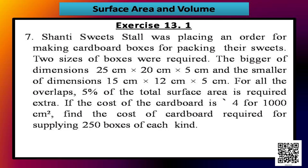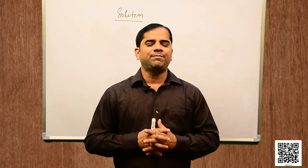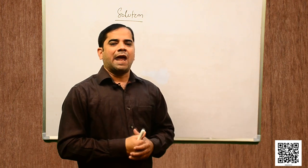Let us solve question number 7. It says: Shanti Sweets stall was placing an order for making cardboard boxes for packing their sweets. Two sizes of boxes were required — the bigger of dimensions 25 cm × 20 cm × 5 cm, and the smaller of dimensions 15 cm × 12 cm × 5 cm. For all the overlaps, 5% of the total surface area is required extra. If the cost of the cardboard is rupees 4 for 1000 cm², find the cost of cardboard required for supplying 250 boxes of each kind.